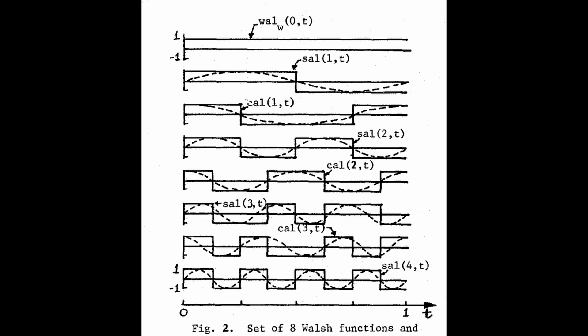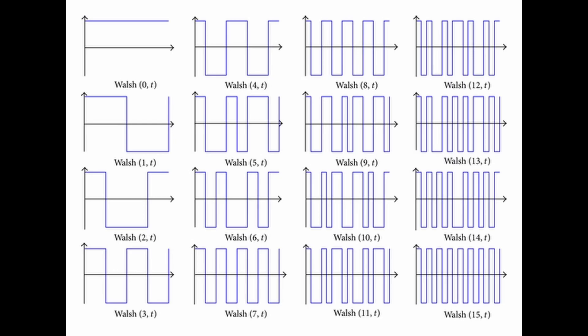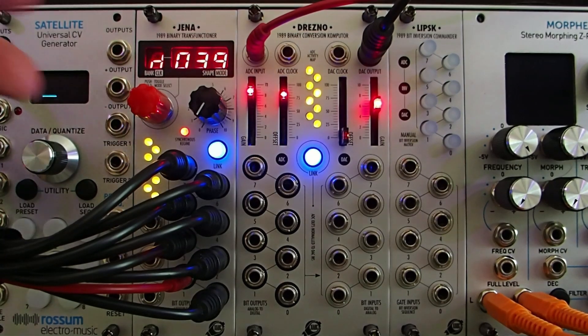Jena can output Walsh functions — but what are Walsh functions? You can find out in Curtis Roth's amazing book, The Computer Music Tutorial. Mathematical research has shown that other groups of waveforms besides sine waves can be used to approximate signals. A family of square waves called the Walsh functions can be used to approximate a signal. While the Fourier series builds up waveforms out of component frequencies, Walsh synthesis builds up waveforms using functions of different frequencies. These functions can be used to manipulate CV as well as audio.